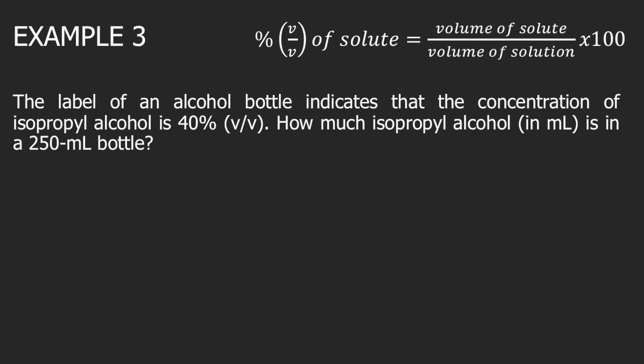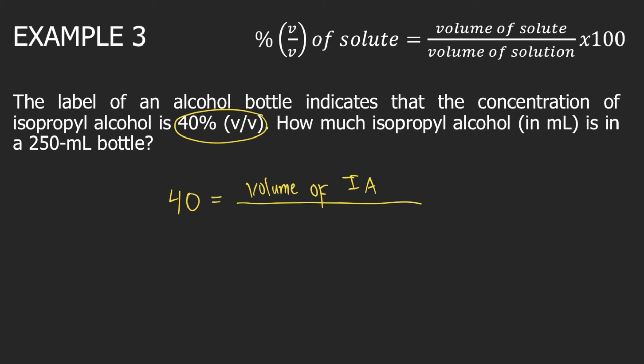Example 3. The label of an alcohol bottle indicates that the concentration of isopropyl alcohol is 40% by volume. How much isopropyl alcohol is in a 250 mL bottle? We will use the formula. The percent by volume is given as 40%, and we are not given the volume of solute — our solute is isopropyl alcohol. So: 40 equals the volume of isopropyl alcohol divided by 250 mL times 100.